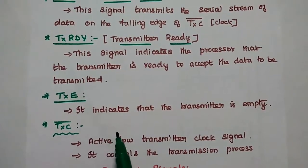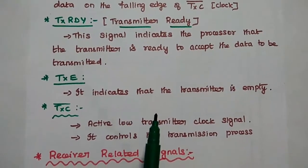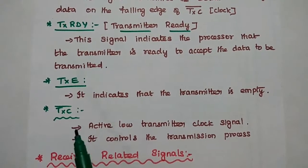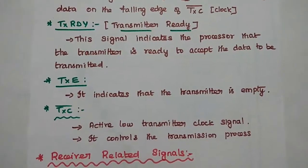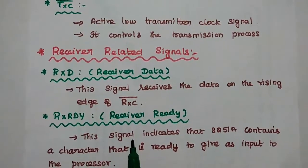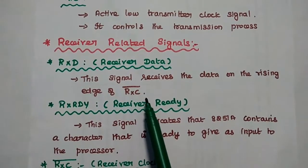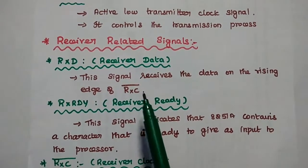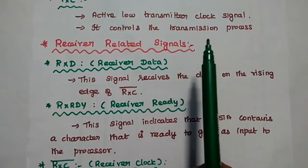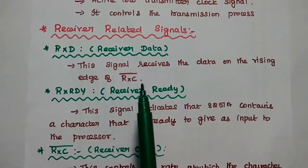The transmitter empty signal indicates to the processor that the transmitter is empty. The transmitter clock (TXC) is an active low signal that controls the transmission process. The RXD (receiver data) signal receives data on the rising edge of the receiving clock signal. In contrast, transmit data occurs on the falling edge of TXC, while data is received on the rising edge of RXC.